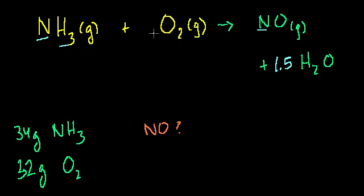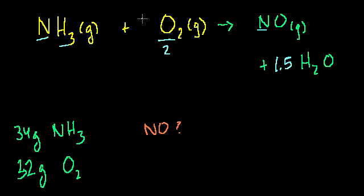Now on the right-hand side: we have two oxygens on the left-hand side. How many oxygens do we have on the right? We have one oxygen in NO, and then one oxygen per water molecule, but we have 1.5 water molecules, so 1.5 oxygens. That gives us 1 + 1.5 = 2.5 oxygens on the right-hand side, but only 2 in O2 on the left. So if we multiply O2 by 5/4, we get 5/4 × 2 = 2.5. Now we have 2.5 oxygens on both sides.